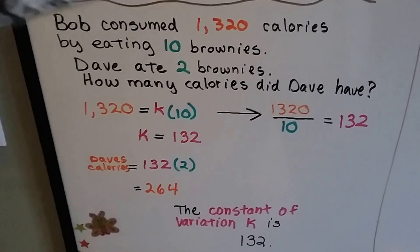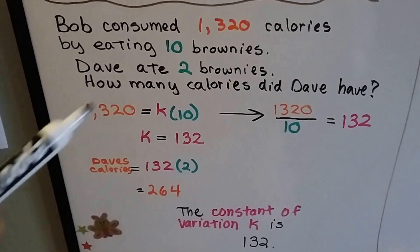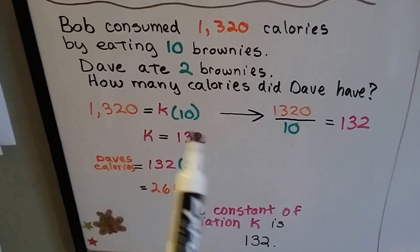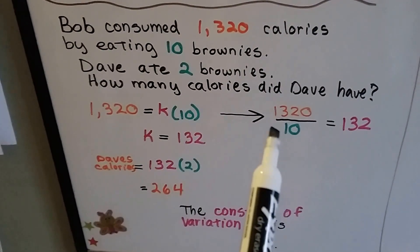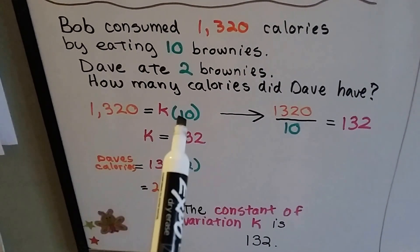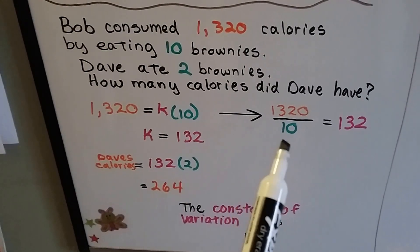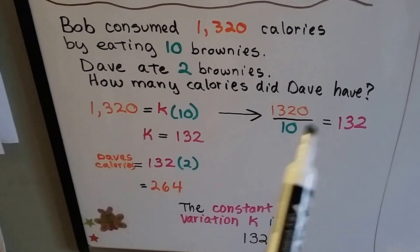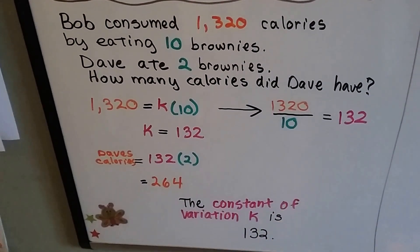We take Bob's information and use it to help solve Dave's. If he consumed 1,320 calories by eating 10 brownies, then all we have to do to find this k is to divide the y value by the x value.